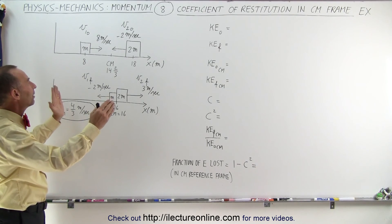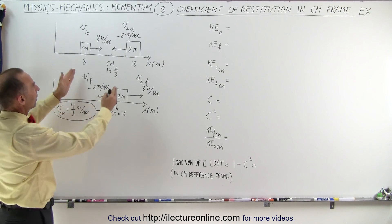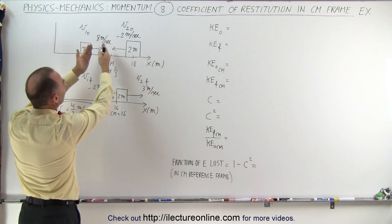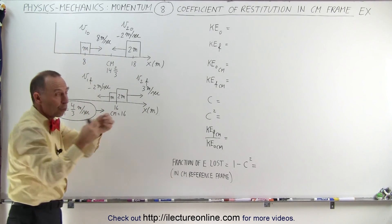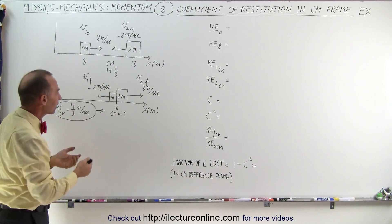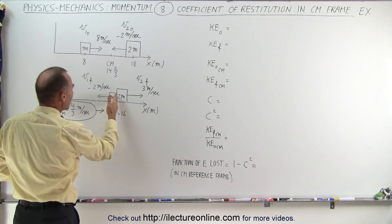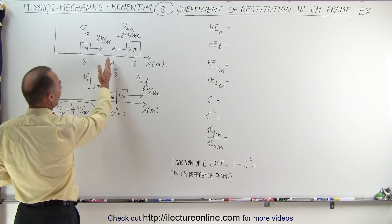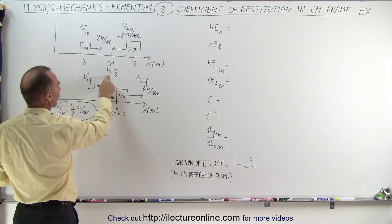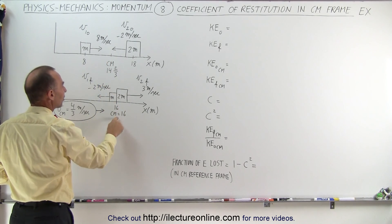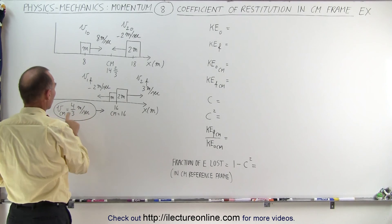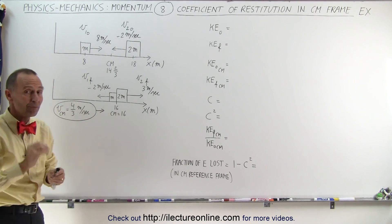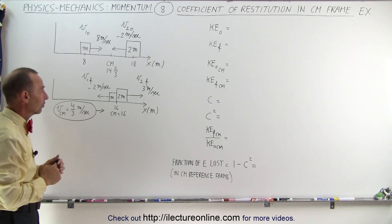One second later they collide — they were 10 meters apart initially and approaching each other, so the approach velocity is 10 meters per second. The center of mass has moved from 14 and 2/3 meters to 16 meters, which means it's moving to the right at 4/3 meters per second.